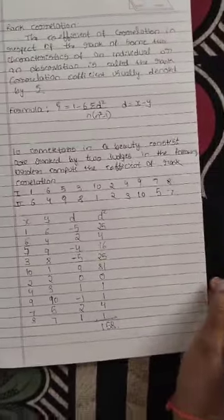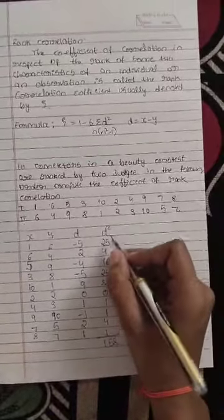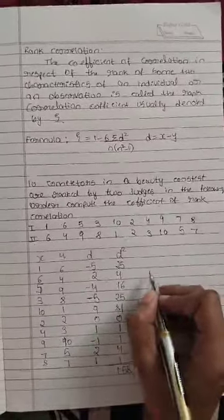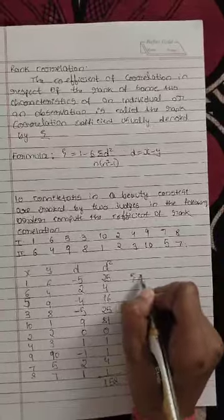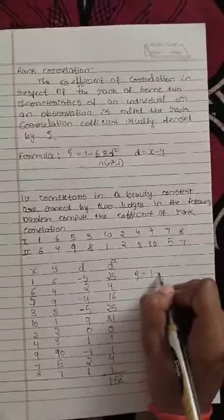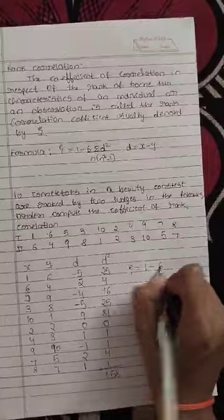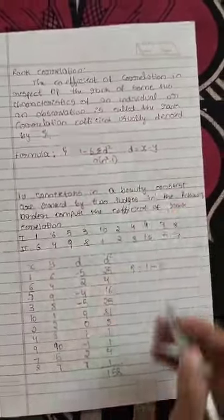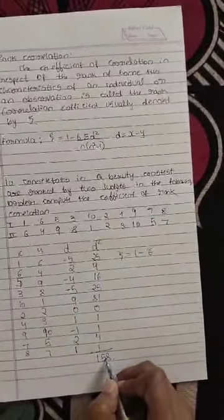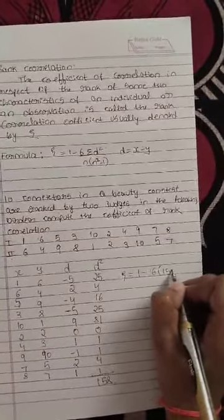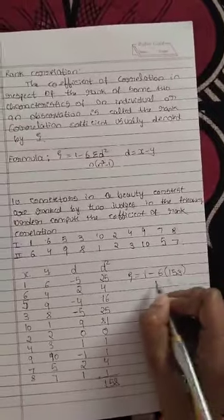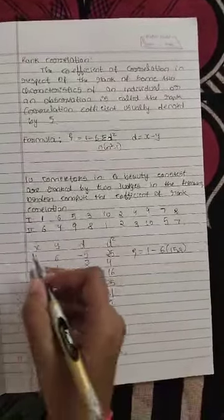Now by calculating it in the formula we will get the rank correlation. Delta equals 1 minus 6 times summation d square. The value is 158, so 6 into 158 divided by n. The n value here is 10, so 10 into 10 square minus 1.